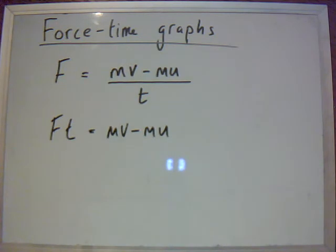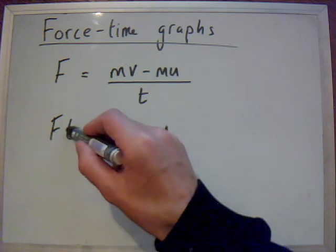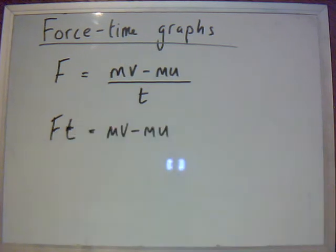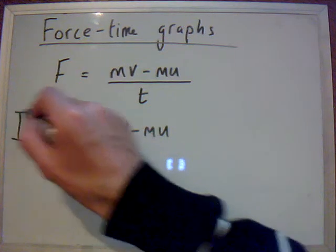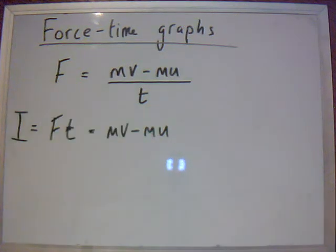Now, force times time is in fact the impulse. Impulse being a force applied for a small period of time, like a cricket ball hitting a bat or throwing a ball against a wall. It's called an impulse. Impulse is sometimes written as I. Now, force times time which is impulse is also MV minus MU which is a change in momentum.